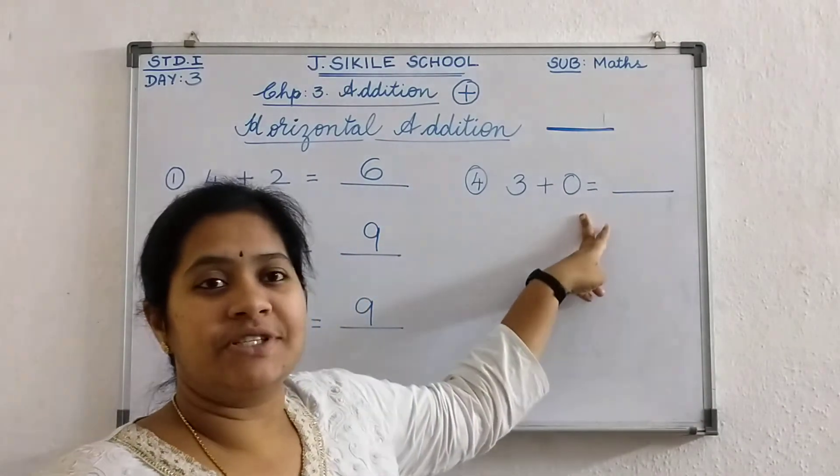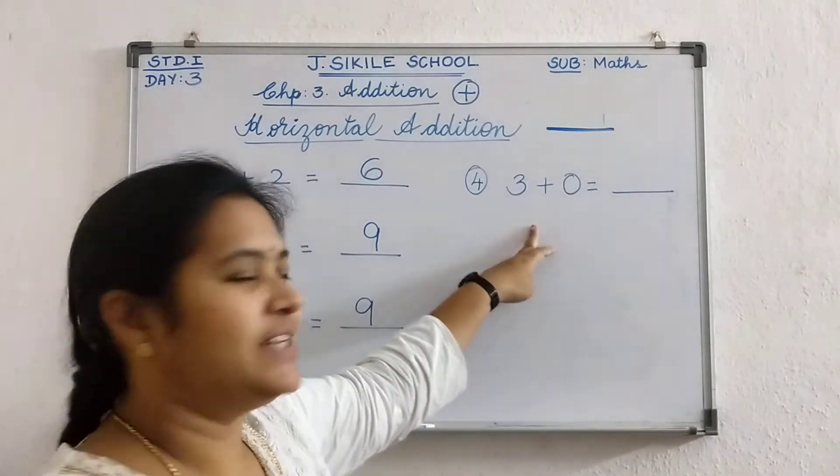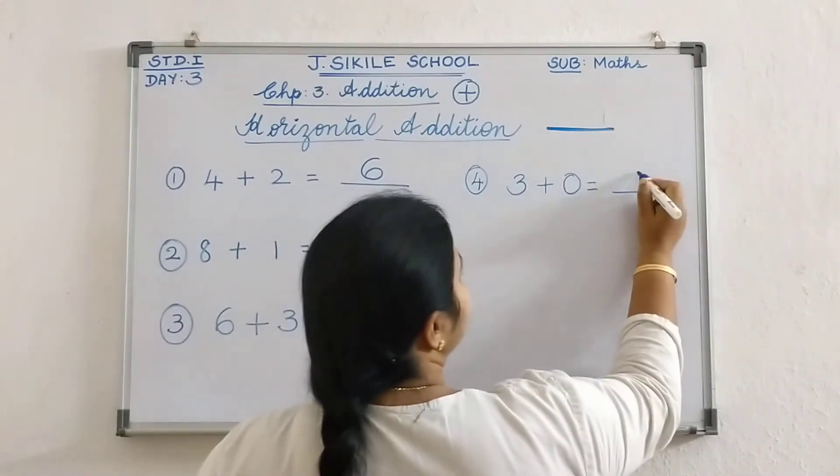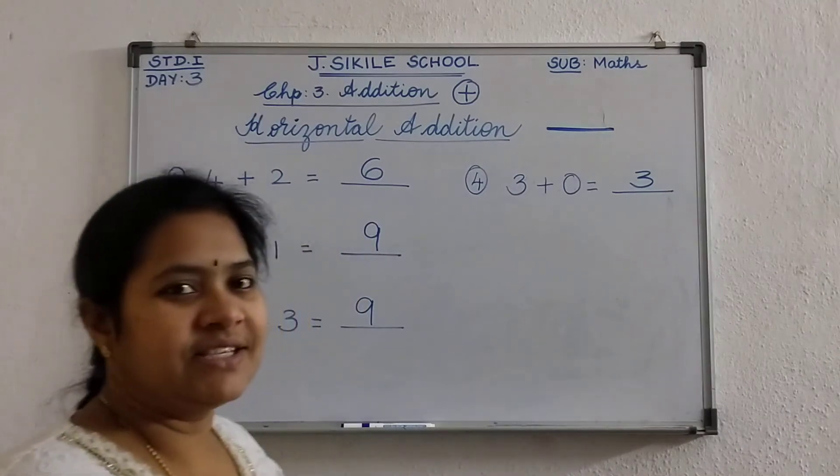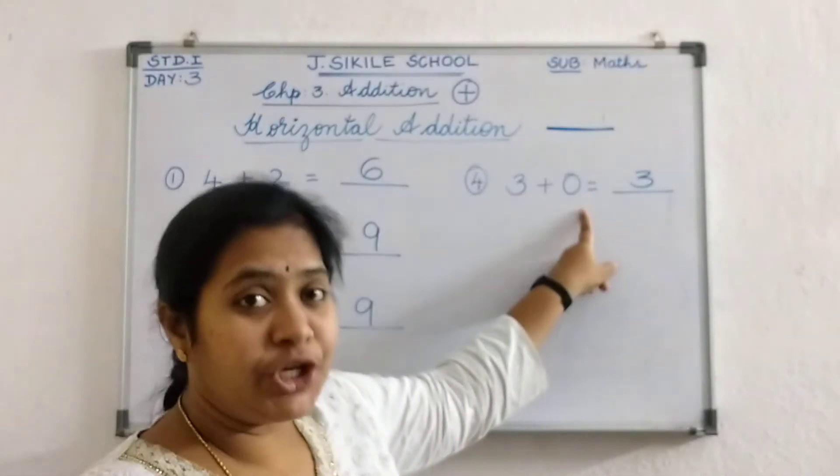When we add any number to the 0 we get the? Very good. You all remember the point. Same number. So 3 only is the answer. Yes. When we add any number to the 0.